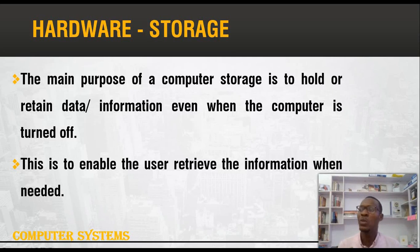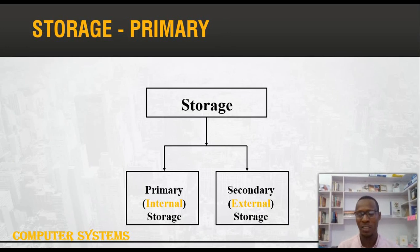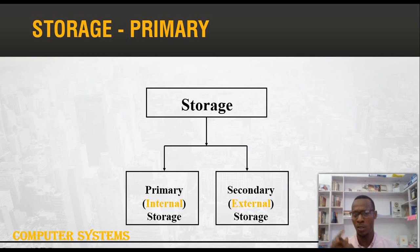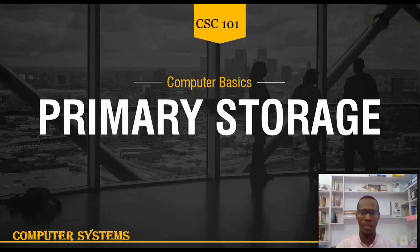It is interesting to know that we have two main types of storage devices. Number one is primary storage, also known as internal storage. Number two is secondary storage, which is also known as external storage. Let's take a look at primary storage.